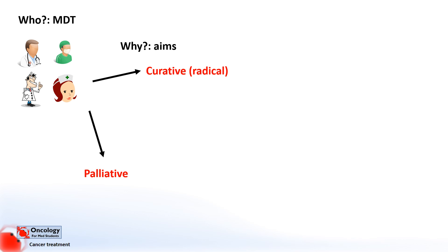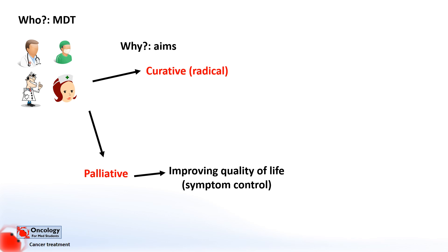Palliative treatment, on the other hand, accepts that in your patient the disease cannot realistically be cured. This might be because of how far the disease is spread, or because the patient is not fit enough to undergo radical treatment. It aims to use treatments to improve symptom control, and thereby improve quality of life, and to extend life. It's worth noting that symptom control is really the most important part, and extending life isn't always worthwhile if the patient's quality of life is affected too badly by the interventions we choose to give.